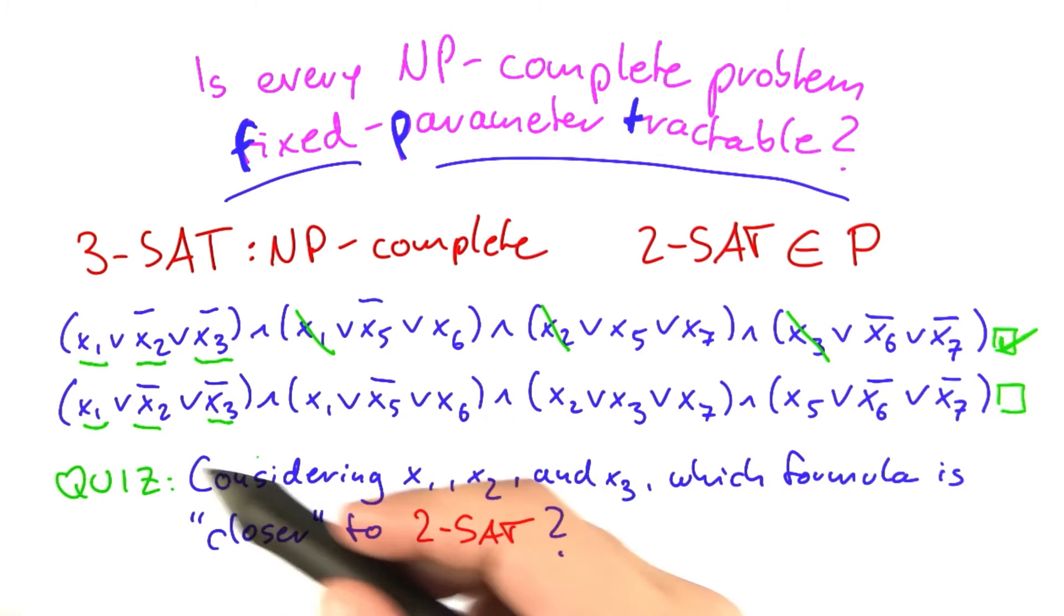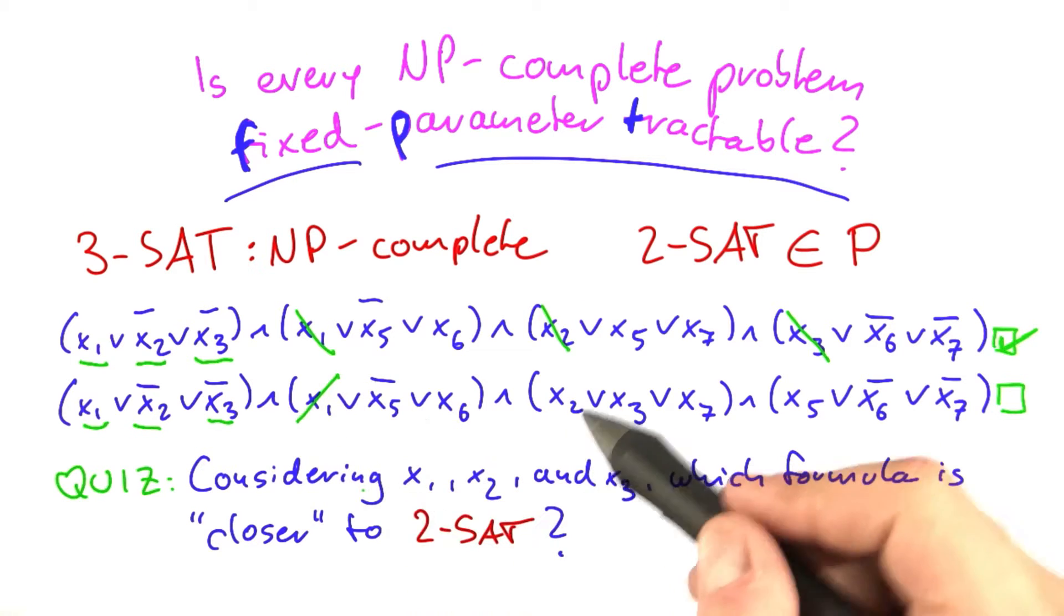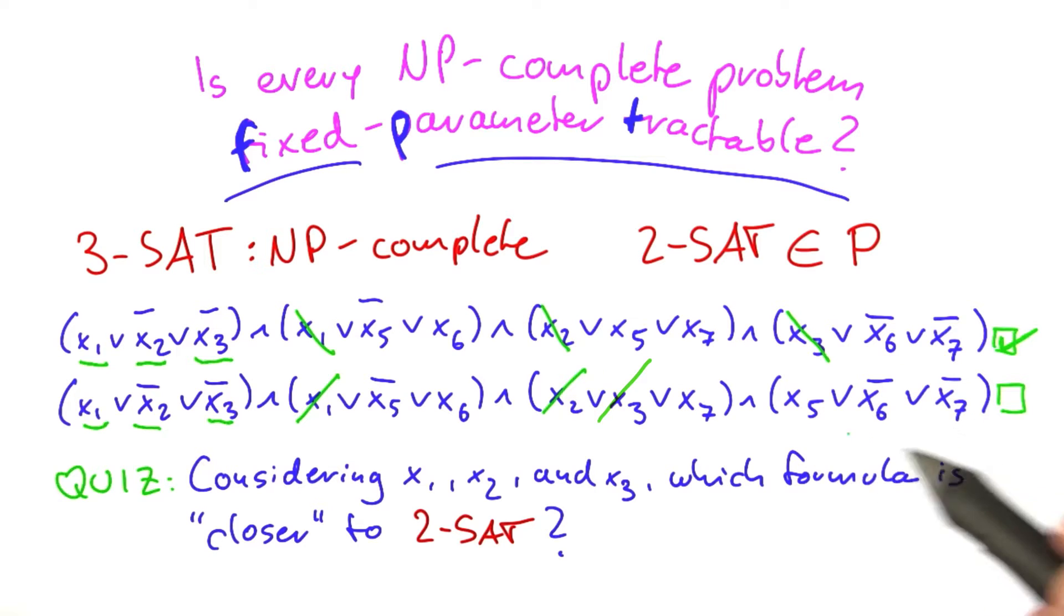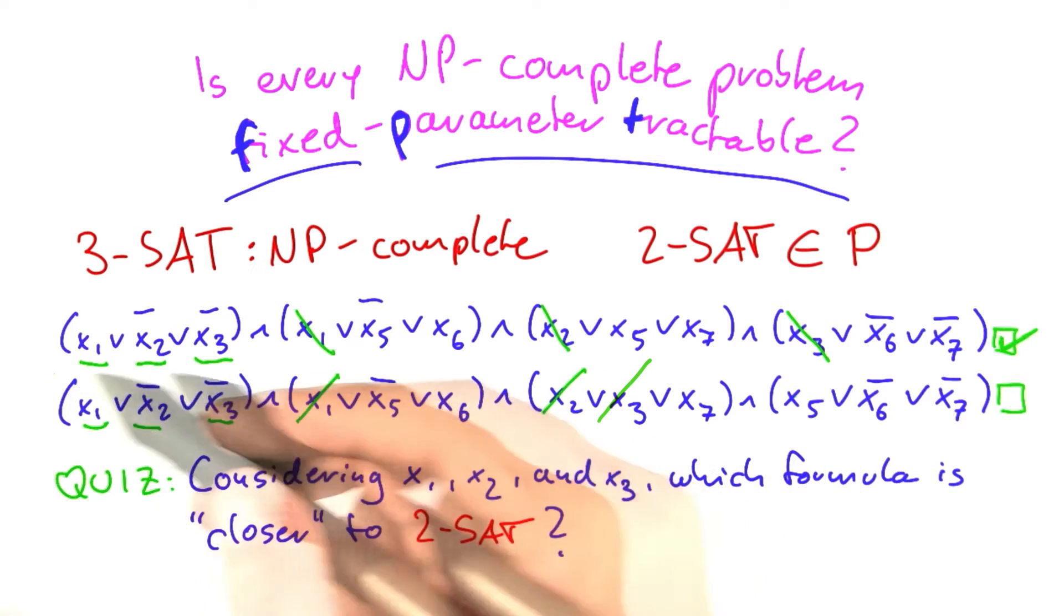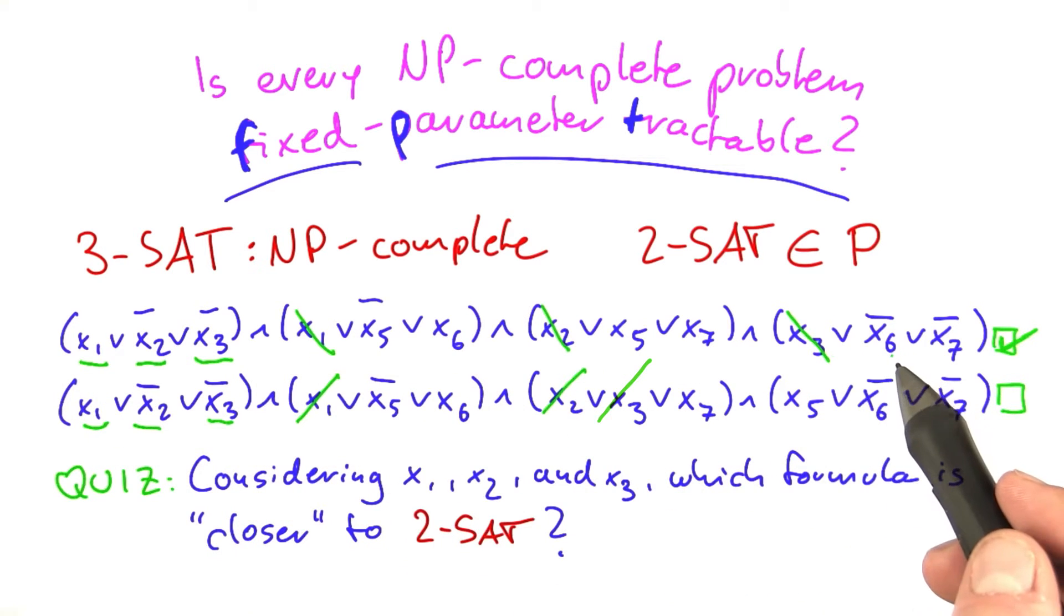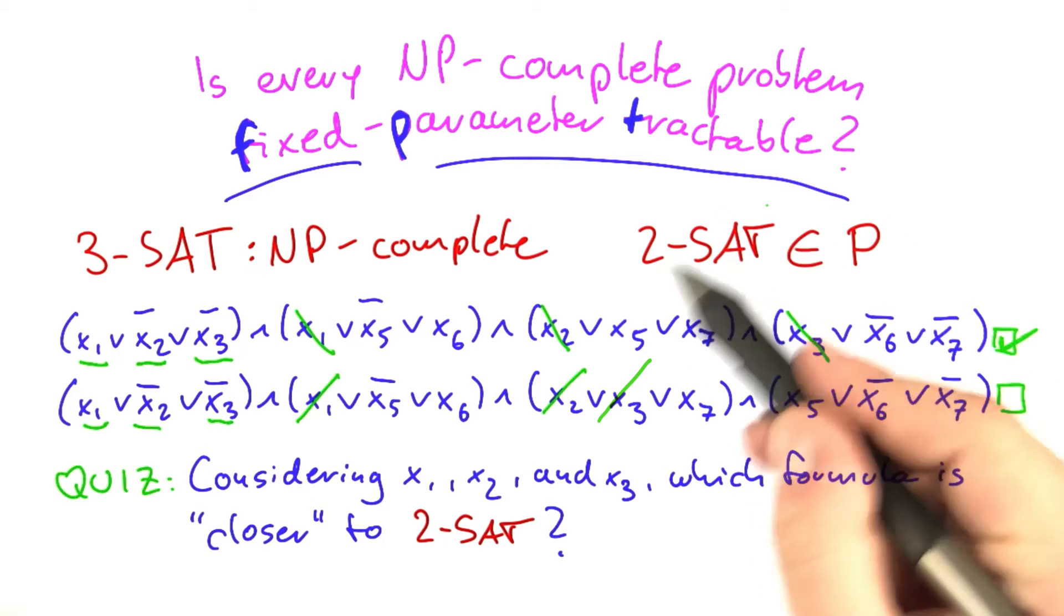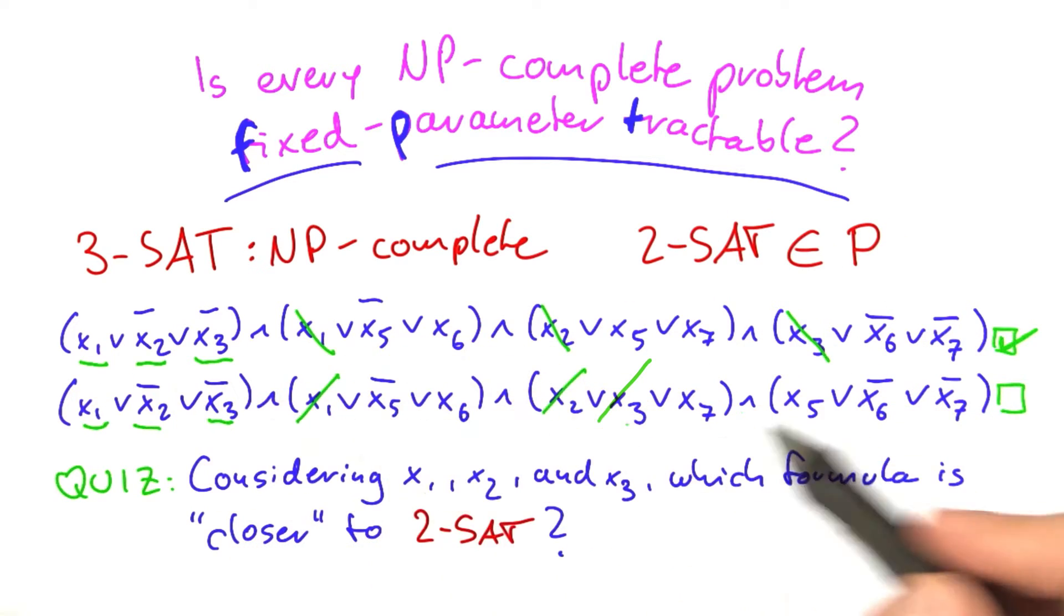Because if here you decide what to do with these values, you have it figured out for this clause here, you have it figured out for this one here, but you have not figured it out for that one here. So in a way, the above boolean formula is closer to a polynomial time solvable instance of SAT than the one down here.